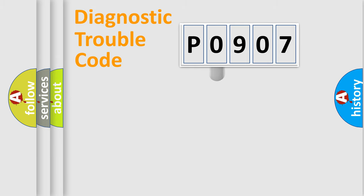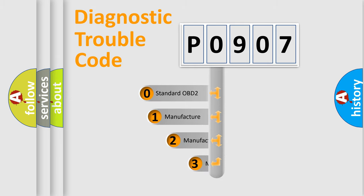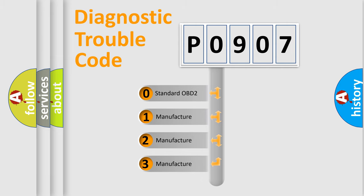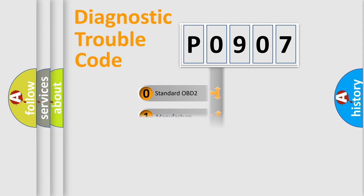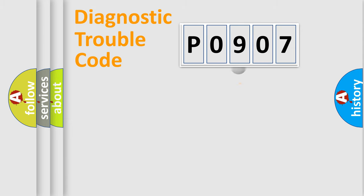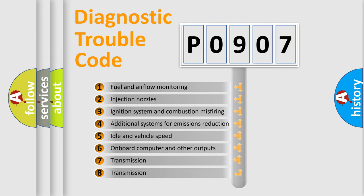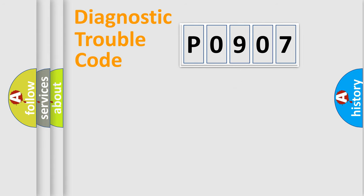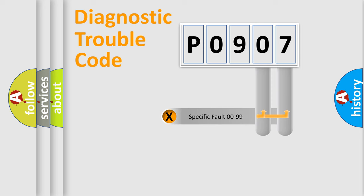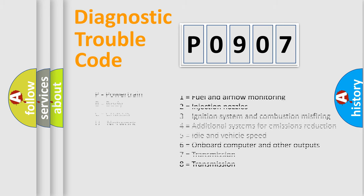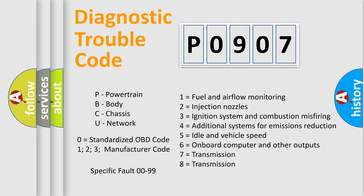This distribution is defined in the first character of the code. If the second character is expressed as zero, it is a standardized error. In the case of numbers 1, 2, or 3, it is a more manufacturer-specific error expression. The third character specifies a subset of errors. This distribution is valid only for the standardized DTC code, and only the last two characters define the specific fault of the group.